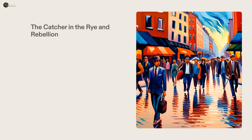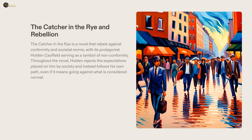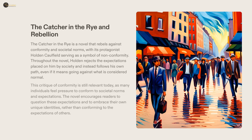The Catcher in the Rye is a timeless classic that critiques the idea of conformity and the expectations placed on individuals by society. Holden Caulfield, the novel's protagonist, is a symbol of non-conformity and encourages readers to embrace their own unique identities and to challenge societal norms. Despite the fact that it was written decades ago, the critique of conformity is still applicable, making it an essential piece of literature to read and appreciate.